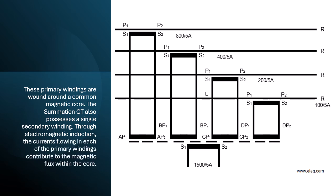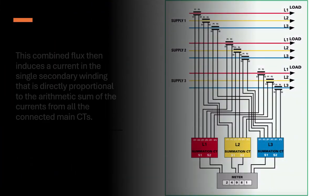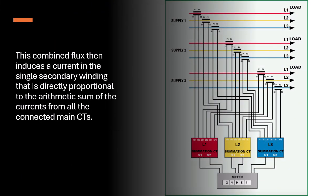The summation CT also possesses a single secondary winding. Through electromagnetic induction, the currents flowing in each of the primary windings contribute to the magnetic flux within the core. This combined flux then induces a current in the single secondary winding that is directly proportional to the arithmetic sum of the currents from all the connected main CTs.